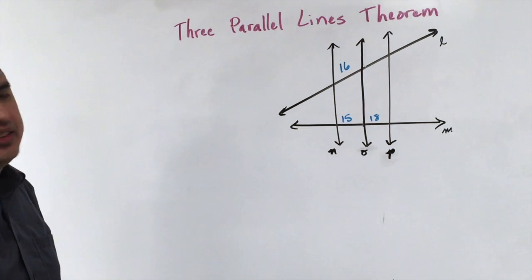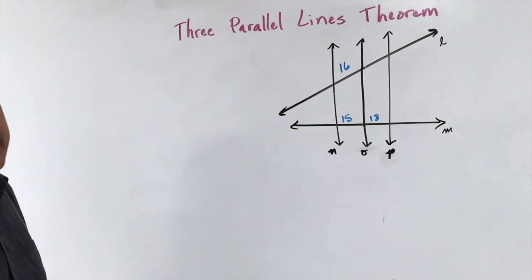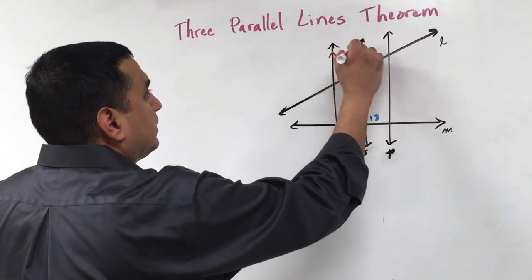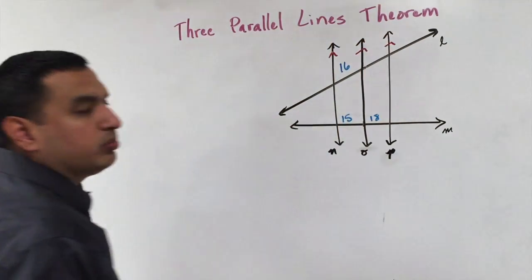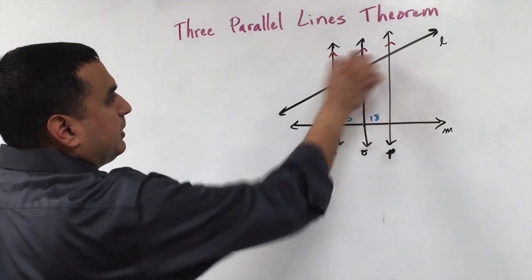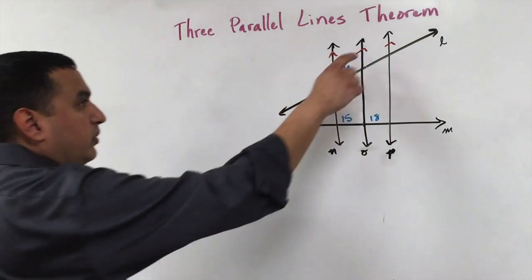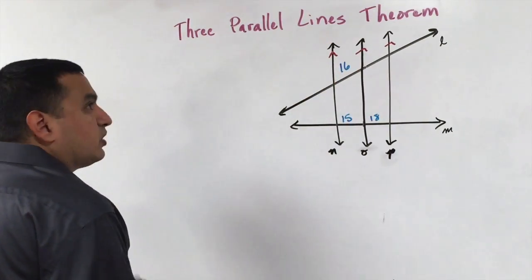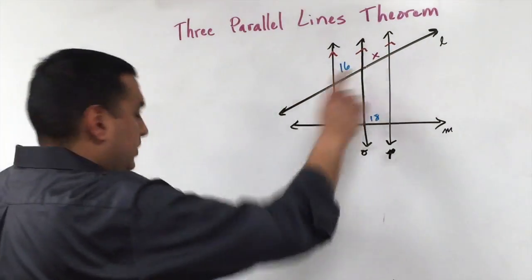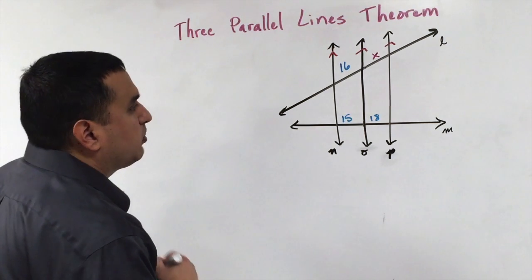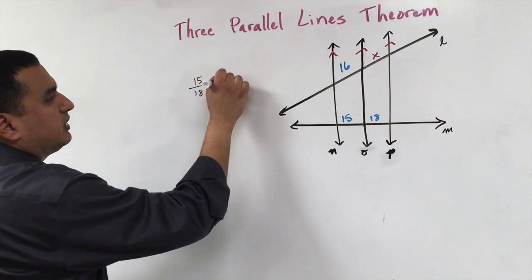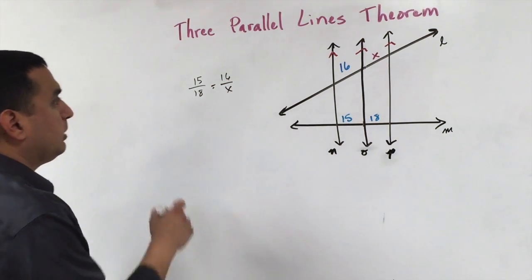The next proportionality theorem is called the three parallel lines theorem. And that simply says that if I have three parallel lines, like these, NOP, then I can set up a proportion with the distances in between each of these lines. So if I wanted to find this distance here, and we could just call this distance, I'll call this distance X right here. What I can do to figure this out is just set up a proportion like we've been doing, where I can set 15 over 18 equal to 16 over X. So if I can cross multiply this,